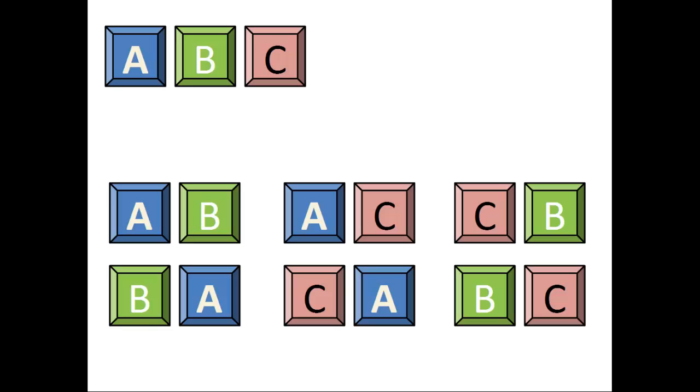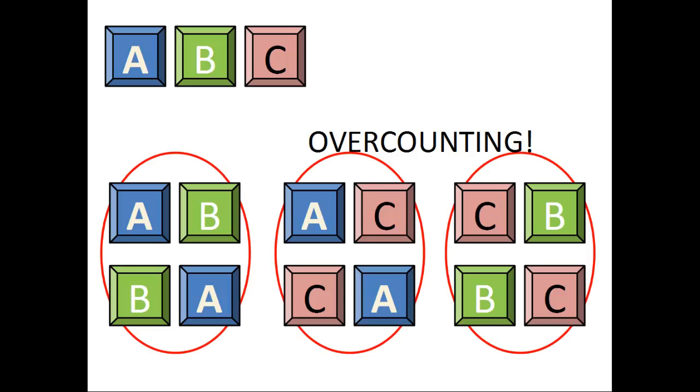However, we know we are over-counting, since we have completely ignored the fact that we have counted for any of the duplicates, such as A, B, and B, A in the first column. How much are we over-counting by? We notice that we have counted each possibility twice. Therefore, we divide our count by 2 to get 6 divided by 2 equals 3 possibilities in total, which is what we initially counted.